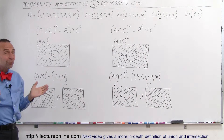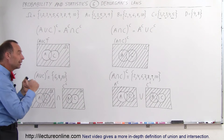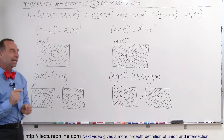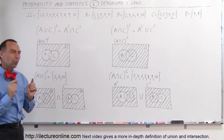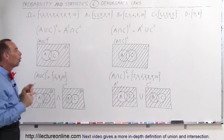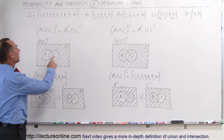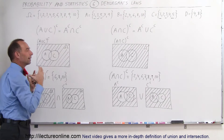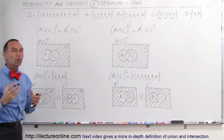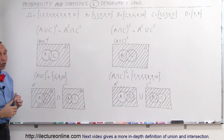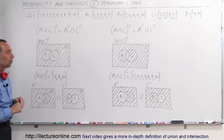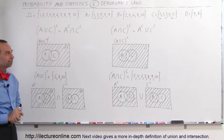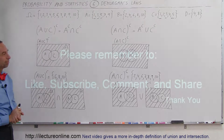And those are what we call the De Morgan's Laws. A little bit confusing, but if you draw it out like this, you can actually make some sense out of it. We're going to do one more video to hopefully clarify the symbolism of union and intersection, to help us understand how to interpret those two symbols as well. That comes in the next video. Thank you.